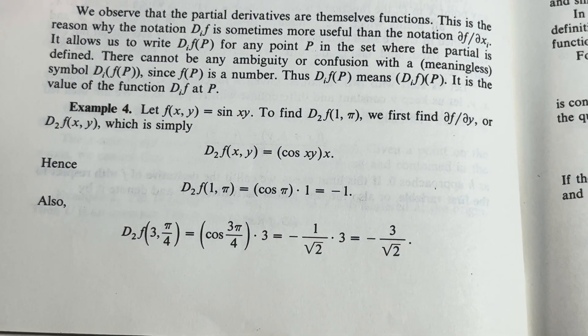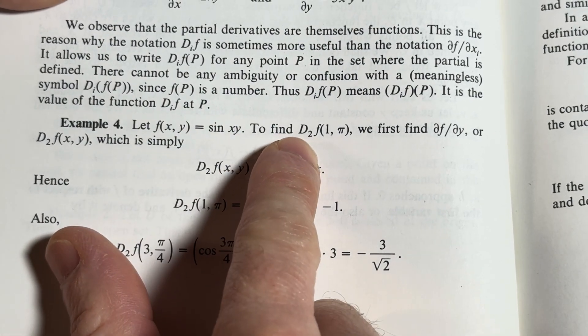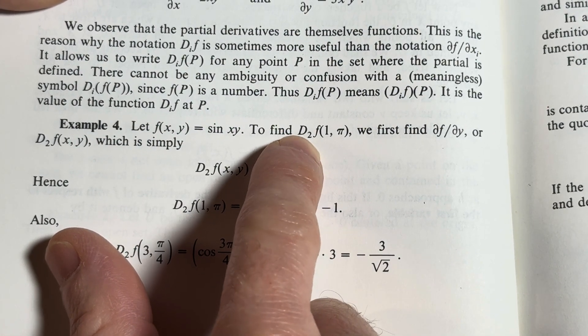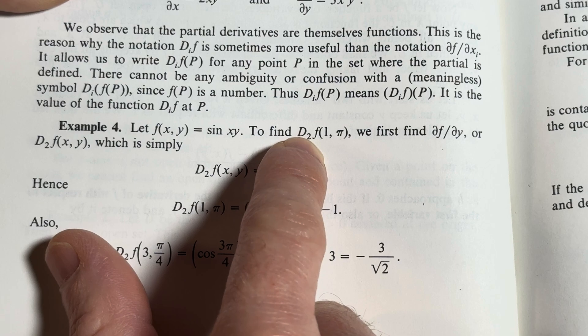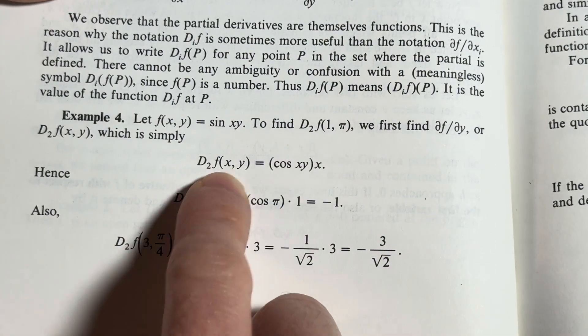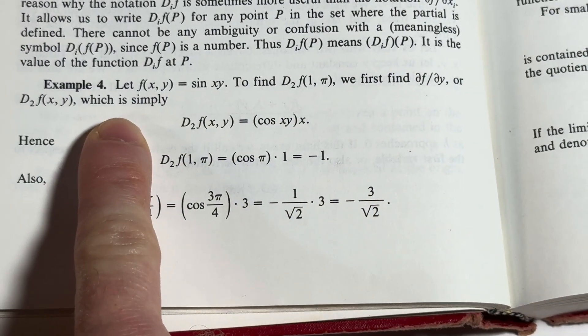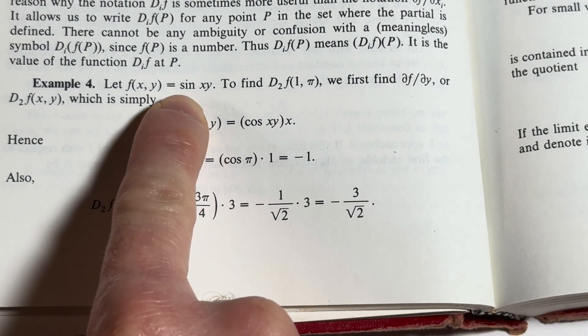And then here's another example. Here you have a function f of x, y equals sine of x, y. And we have to find this is the partial derivative with respect to the second variable at the ordered pair one comma pi. So they first find this or this, which is simply, so they take the partial here,